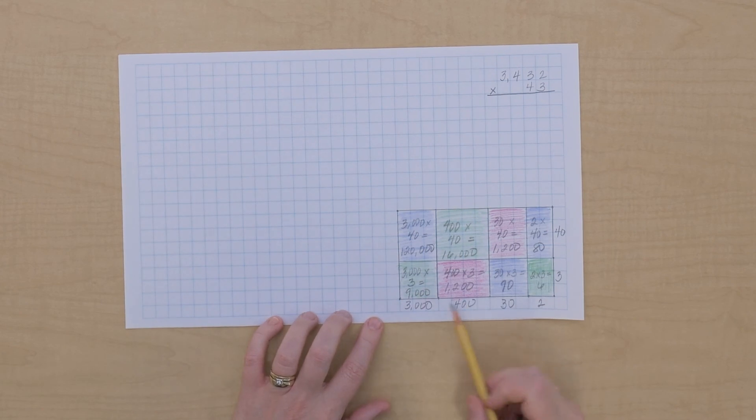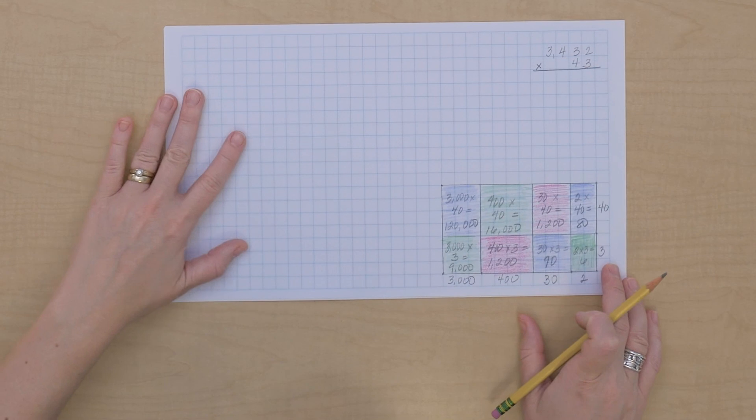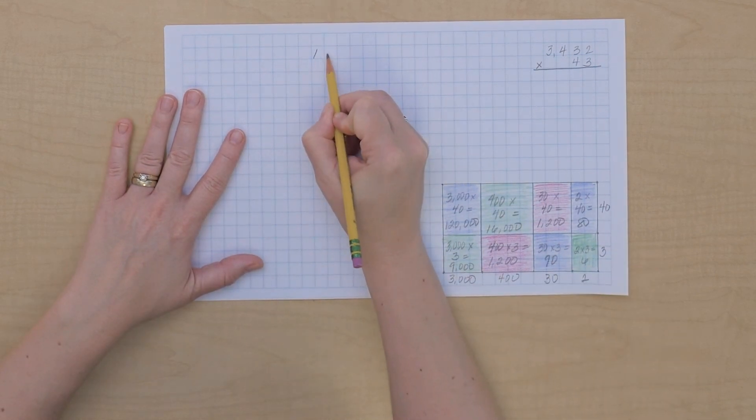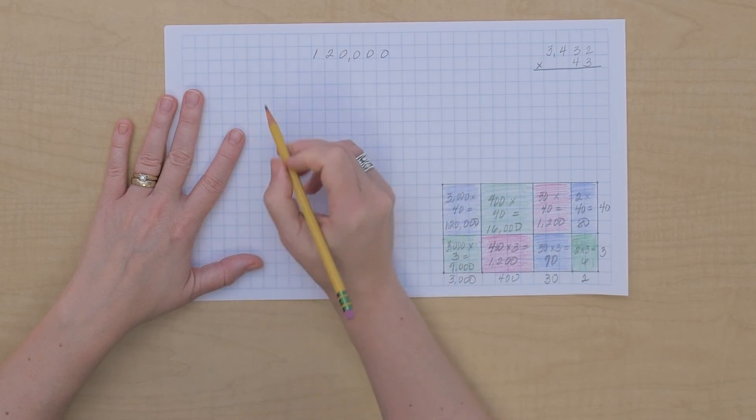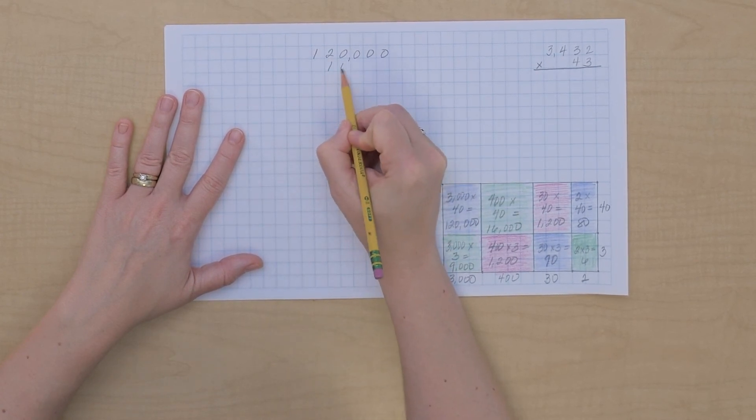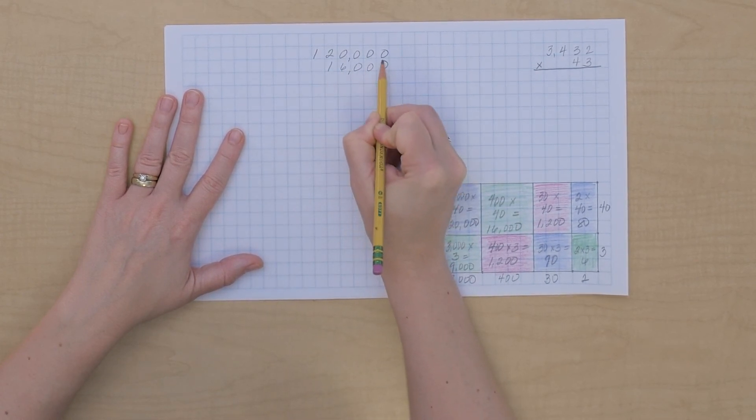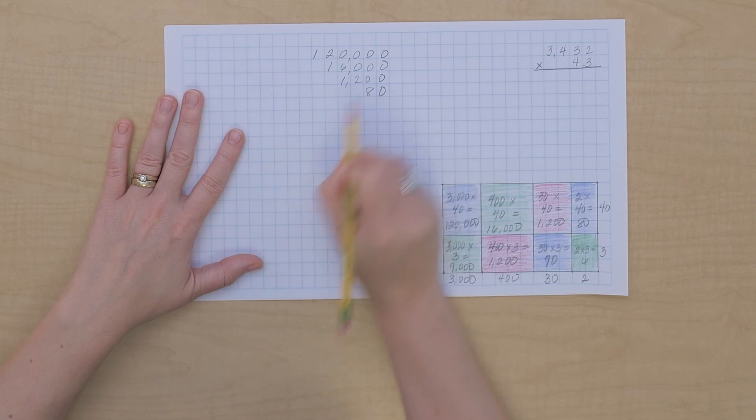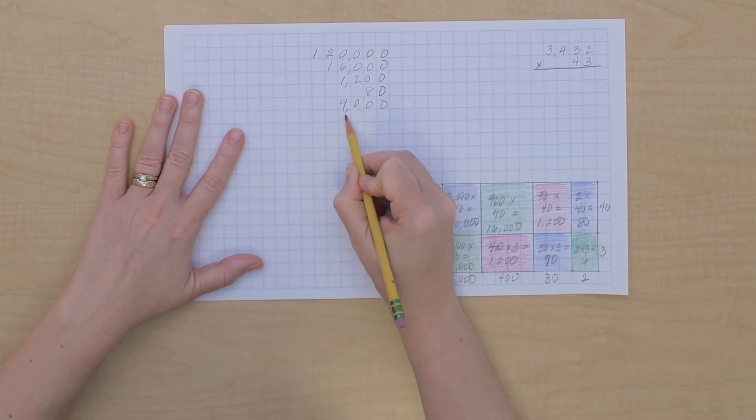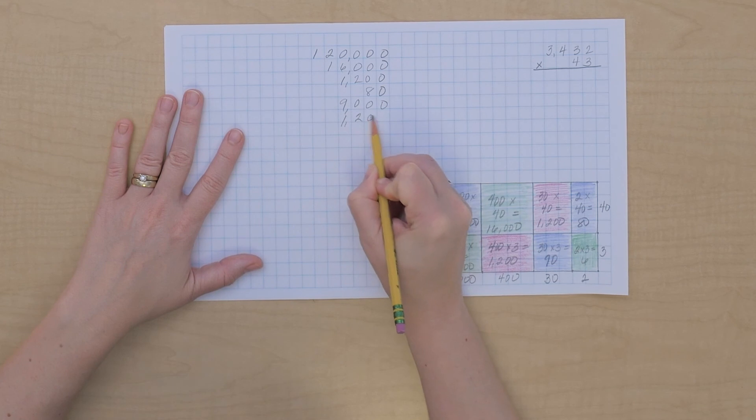Now to find our final answer, we can add up all these multiplications that we've done. So we could add 120,000 plus 16,000 plus 1,200 plus 9,000 plus 1,200 plus 90 plus 6.